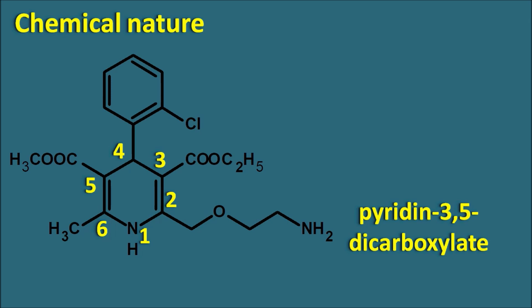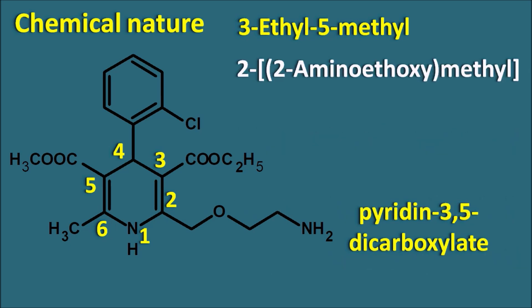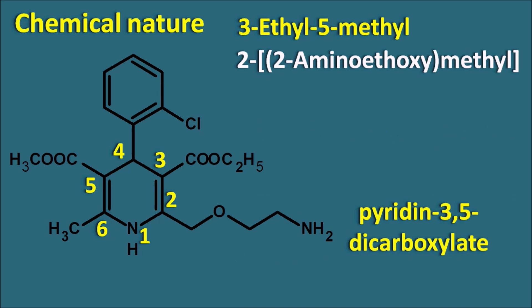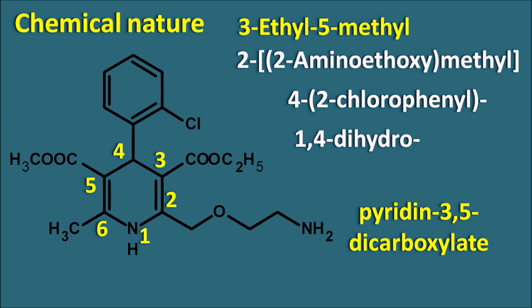The esters are not formed by the same groups. At the third position, an ethyl group forms the ester, but at the fifth position, a methyl group forms the ester, giving the prefix 3-ethyl-5-methyl. At the second position, a methyl group is further attached with the amino ethoxy group, written as 2-(2-aminoethoxy)methyl. The fourth position has a phenyl ring with a chloro group at the ortho position, written as 4-(2-chlorophenyl). The ring is 1,4-dihydro and the sixth position has a methyl group.